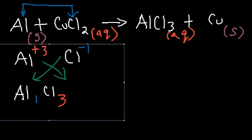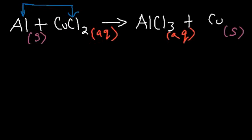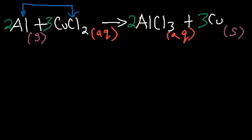Now we need to balance the single replacement reaction. Notice that we have two chlorine atoms on the left and three on the right. The LCM of two and three is six. So we need to get six chlorine atoms on both sides. Therefore we put a 3 in front of CuCl2 and a 2 in front of AlCl3. Now we have six chlorine atoms. We need a 3 in front of Cu and a 2 in front of Al. The reaction is now balanced.